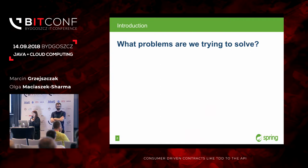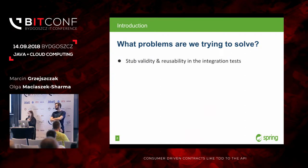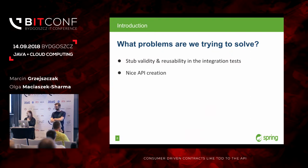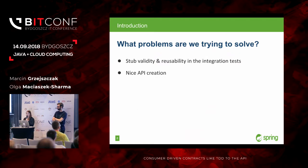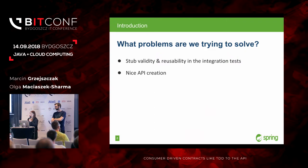What problems are we trying to solve? Typically when you come to presentations, people tell you we have this great solution, it's a silver bullet. We are not that ambitious, but we will be happy if we can solve these two problems: the validity and reusability of stubs for integration tests, and nice API creation.